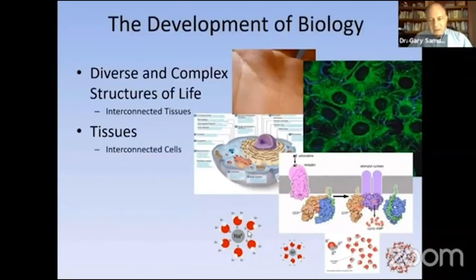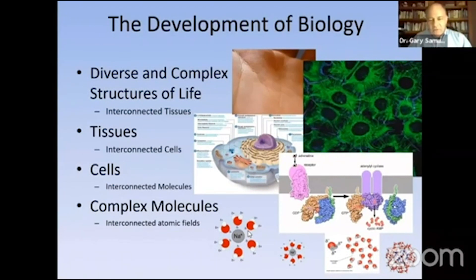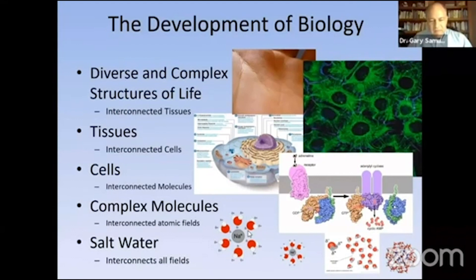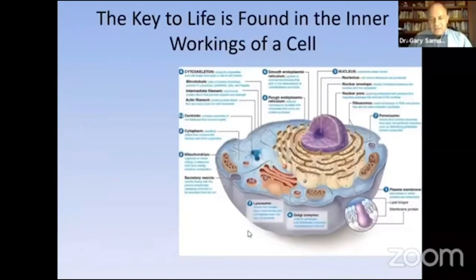As we develop our understanding of biology, we realize that we are made out of a bunch of tissues, and those tissues are made of interconnected cells. These cells have all sorts of things happening — they're a metropolis of activity from complex molecules that are connected and orchestrated. They're all connected through the saltwater medium; everything in biochemistry takes place in salt and water. The salt and water also become oxidized and reduced — what they call redox, reduction-oxidation technologies.